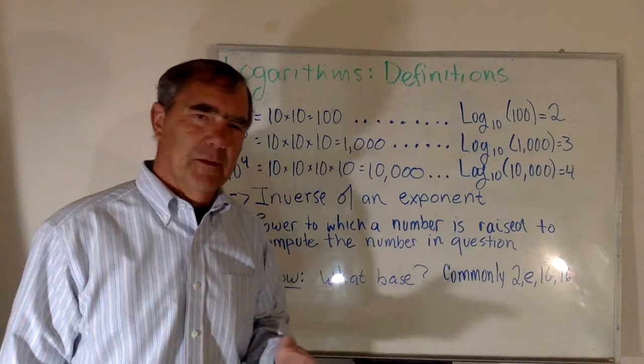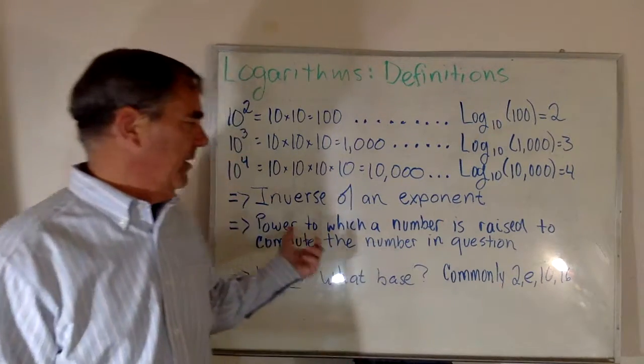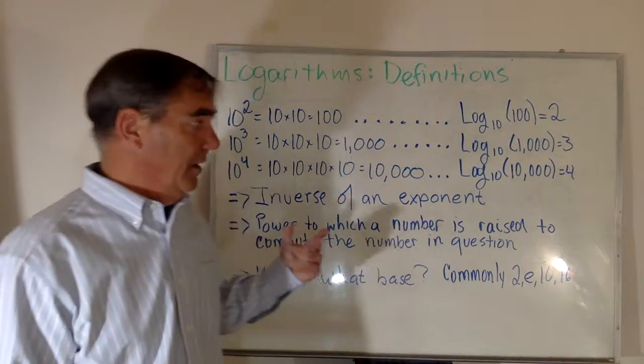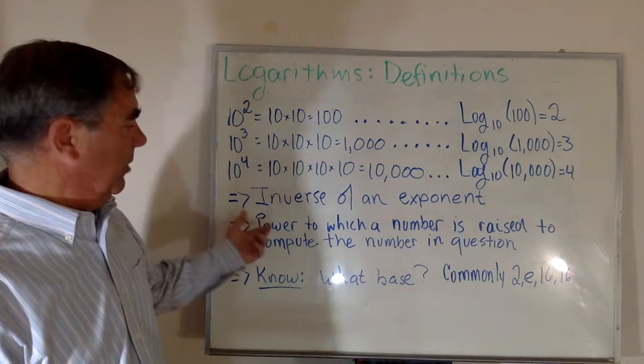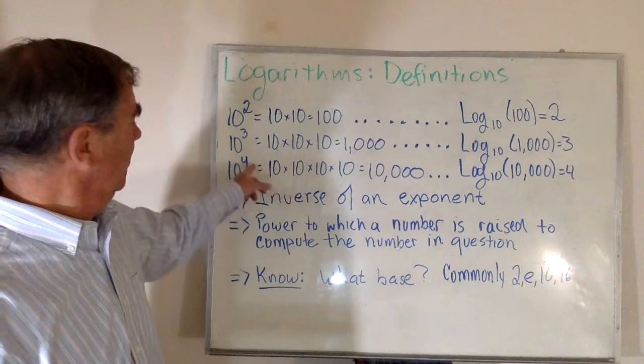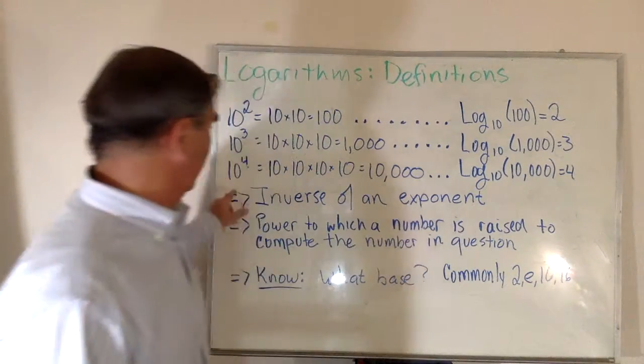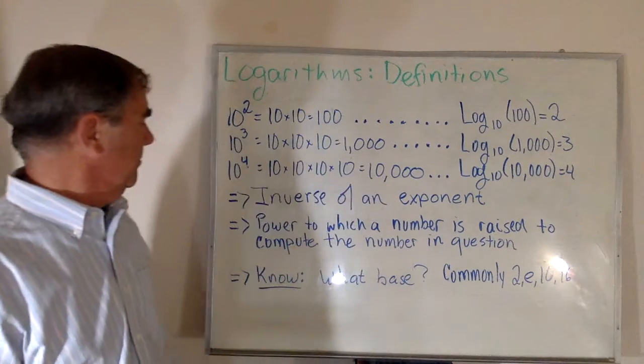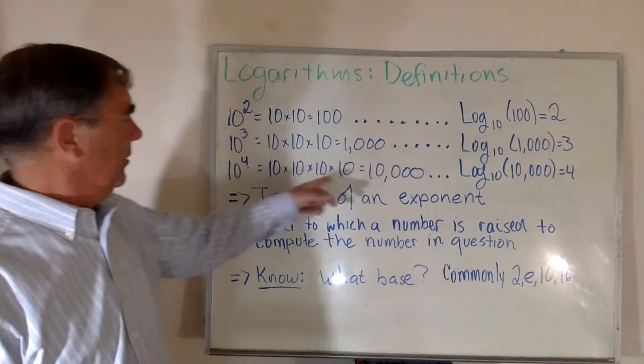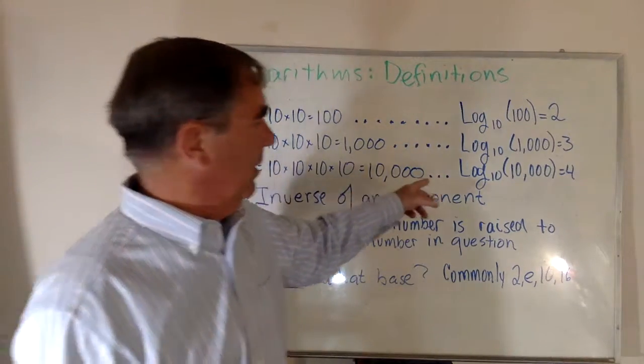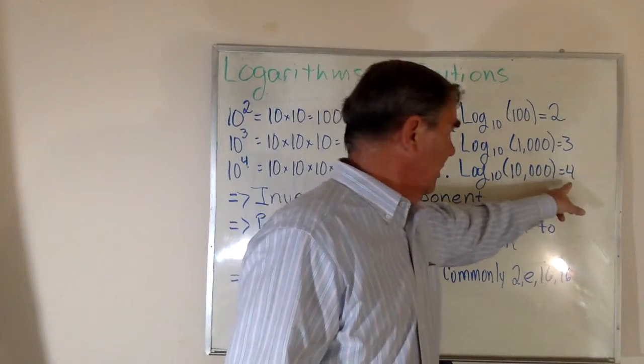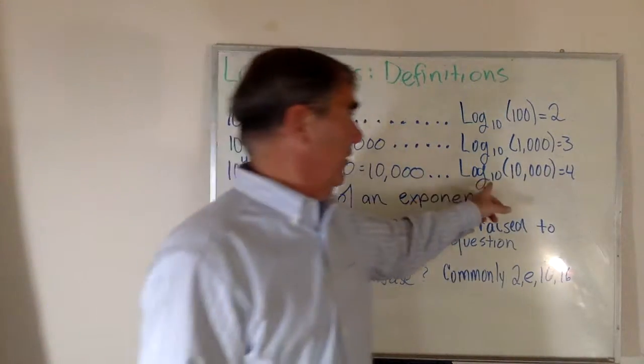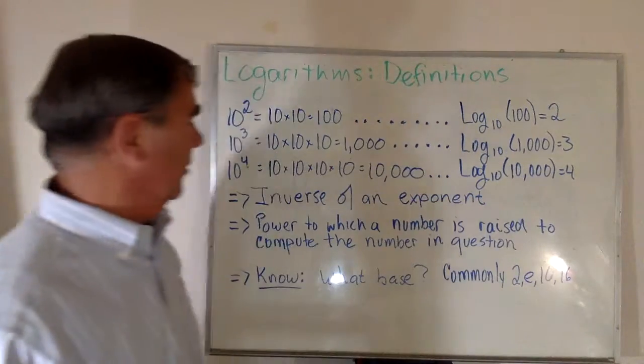Your textbooks probably define a logarithm as the inverse of an exponent, which it is, but I don't find that very insightful. It can also be thought of as the power to which a number is raised in order to compute the number in question. So 10 to the fourth is 10,000 and the power to which 10 must be raised is 4 in order to get 10,000. So the base 10 logarithm of 10,000 is 4.